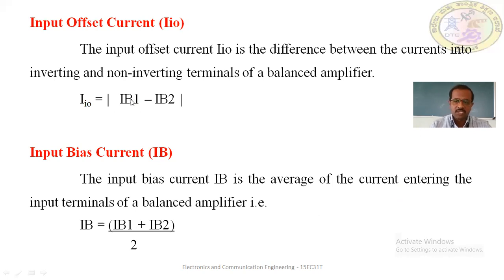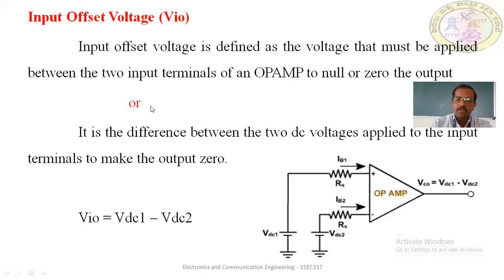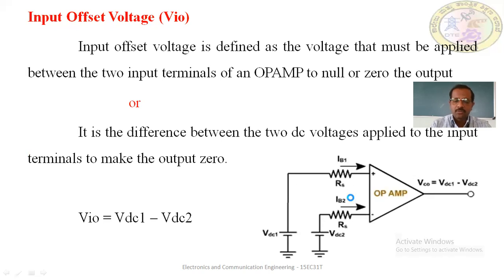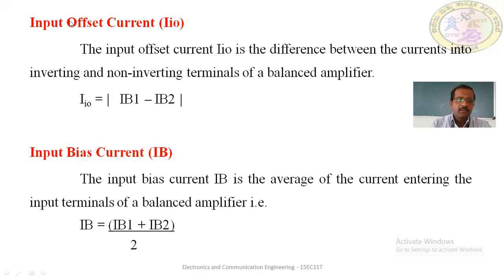In the symbolic representation, the non-inverting terminal is positive and the inverting terminal is negative. If you take the difference of the two currents, that is the input offset current. So IIO = IB1 − IB2 is the difference between the currents into the inverting and non-inverting terminals of the balanced amplifier.